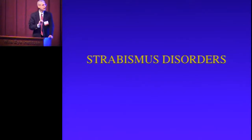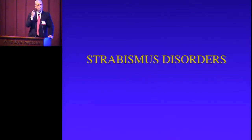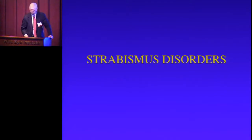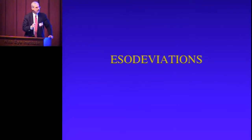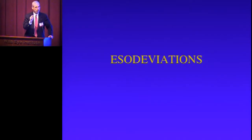Let's talk about some of the common strabismus disorders we see in pediatric ophthalmology. The most common type of deviation in pediatric ophthalmology is esodeviations, or turning in of the eyes.